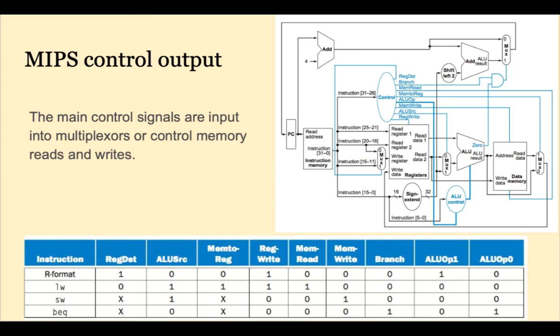Some of the control signals go into multiplexers to control data flow. Examples of these are regdest, ALU source, mem2reg, and branch.